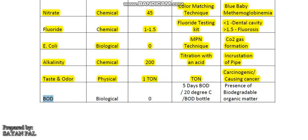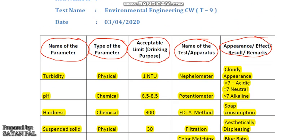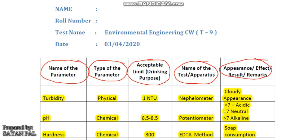And BOD — biochemical oxygen demand. It is a biological water quality parameter and it measures the presence of biodegradable organic matter. Its amount should be 0, and it is measured using a BOD bottle by taking the 5-day BOD value at 20 degrees Celsius. These are the important water quality parameters. Thank you.